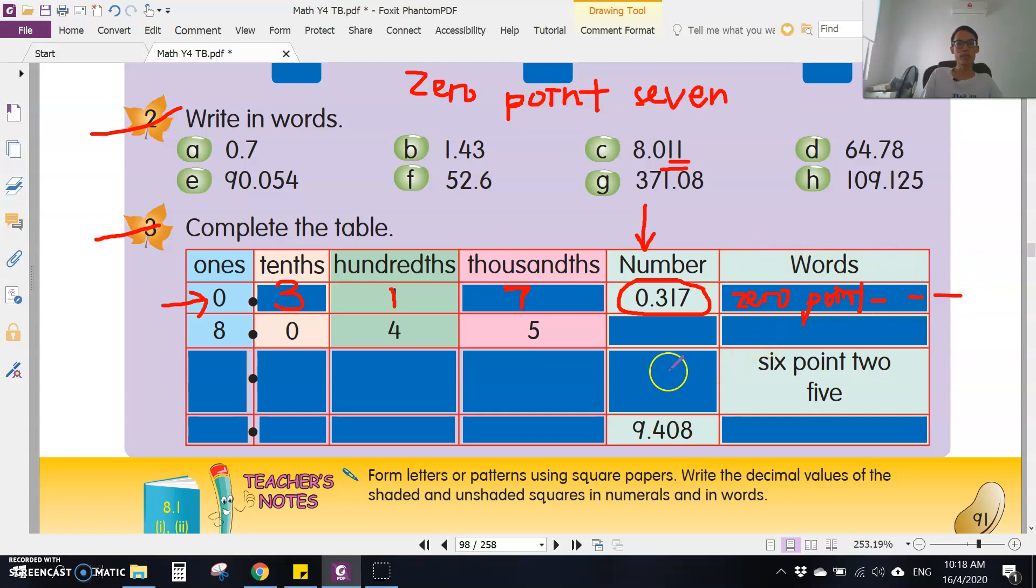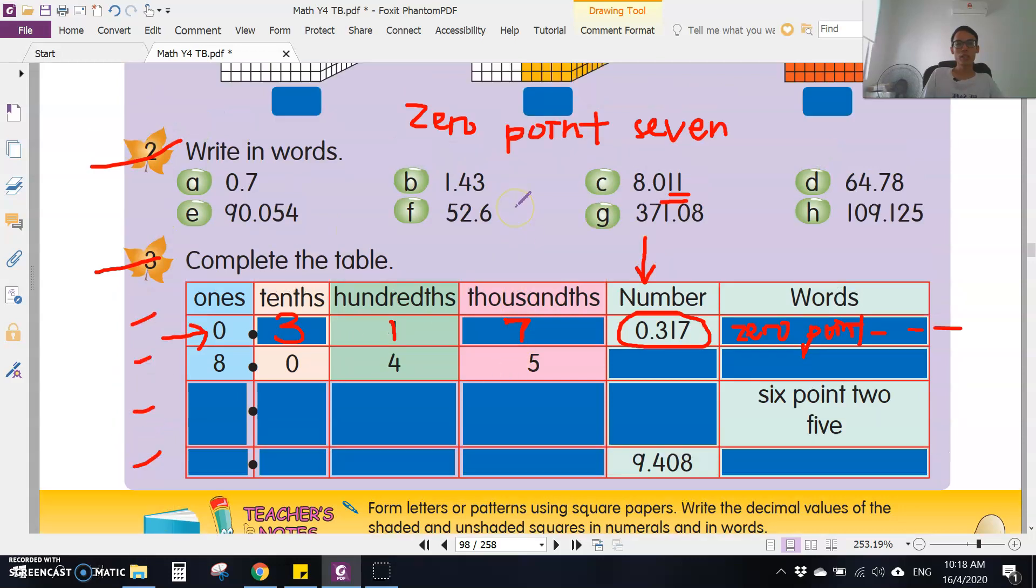So you complete this table. Four questions here. Draw this table and complete it according to the place values. Okay, so this is your homework for today. Pause the video and you can look at the exercise now. You can do it in your exercise book and we'll discuss in the next video. If you have learned something, hit the like button, subscribe to this channel, and I'll see you in the next video. Goodbye.